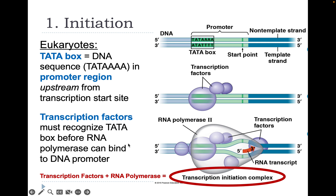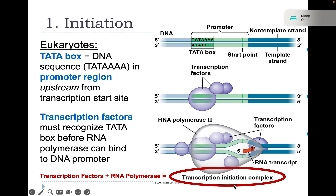Transcription factors and RNA polymerase together in eukaryotic cells produce the transcription initiation complex.